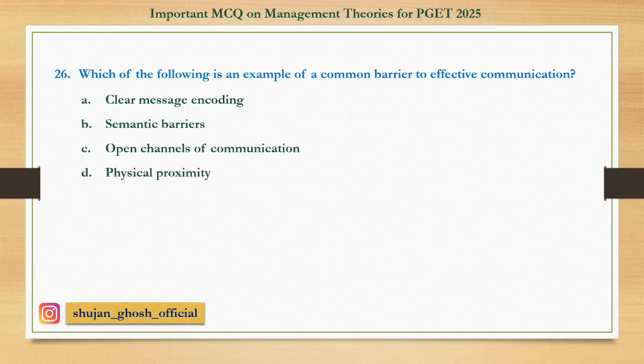Question 26: Which of the following is an example of a common barrier to effective communication? Option A: Clear message encoding. B: Semantic barriers. C: Open channel communication. D: Physical proximity. Answer is Semantic barriers.